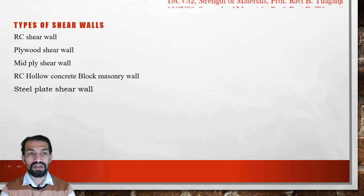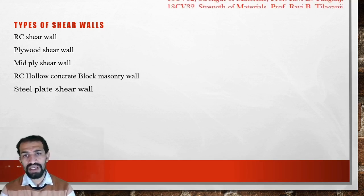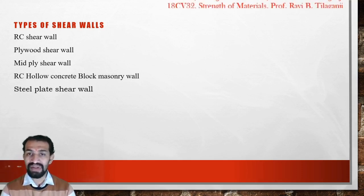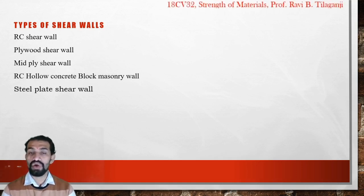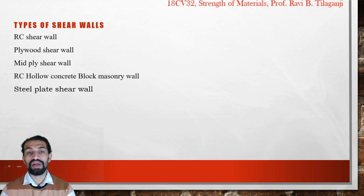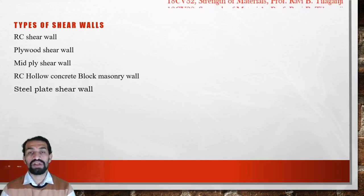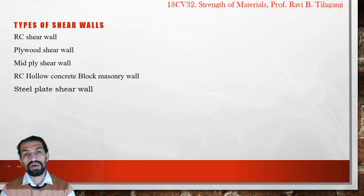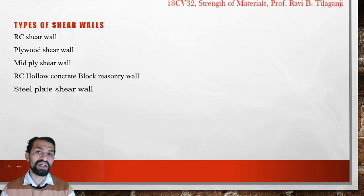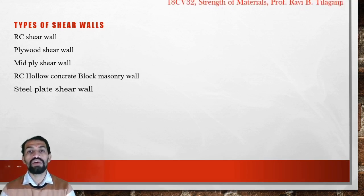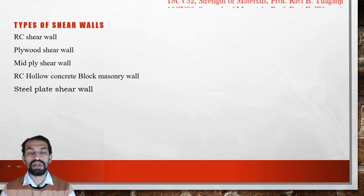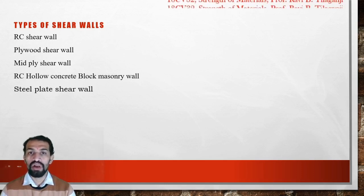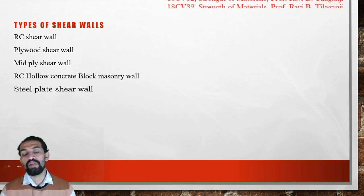RCC shear wall — that is reinforced concrete shear wall — plywood shear wall, mid-ply shear wall, RCC hollow concrete block masonry wall, and steel plate shear wall are the types used. Steel plate shear walls are seen in bunkers and silos — large room-size box constructions — and also where roof sheets are used in horizontal or vertical wall sections.